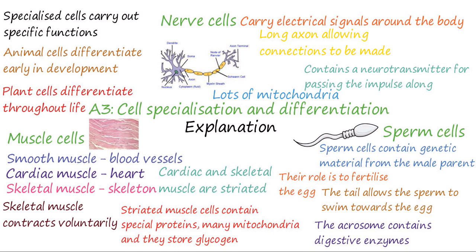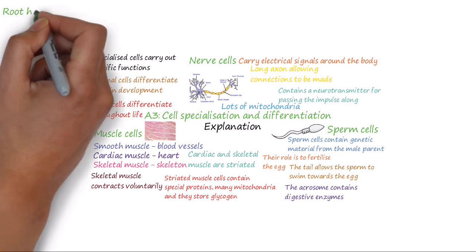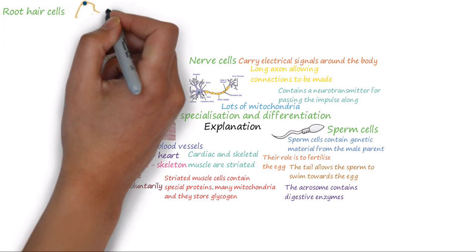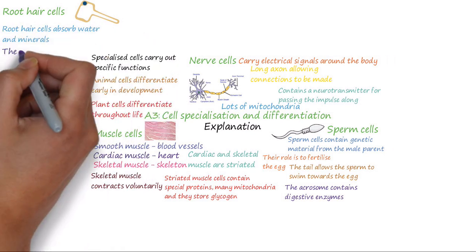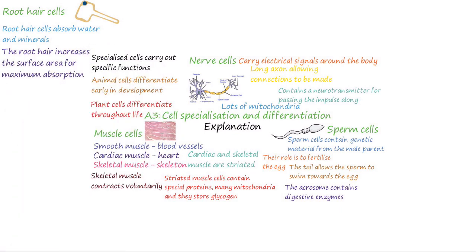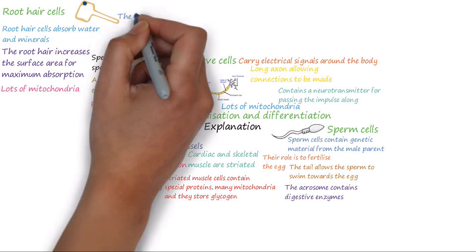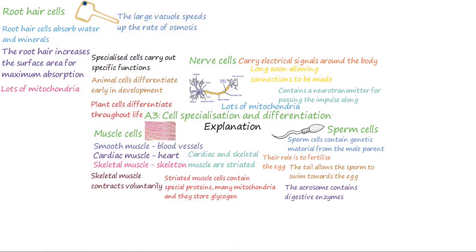Those are some examples of specialised animal cells, and now we're going to look at some examples of specialised plant cells. Root hair cells absorb water and minerals efficiently from the soil. The root hair, which is a small, thin extension poking out of the cell into the soil, increases the surface area of the cell in contact with the soil, allowing for maximum absorption. Root hair cells have many mitochondria to provide the energy needed for the active transport of minerals into the cells. They also have a large vacuole to speed up the rate of osmosis, which is the movement of water into the cell. We will discuss active transport and osmosis in more detail in the next video.